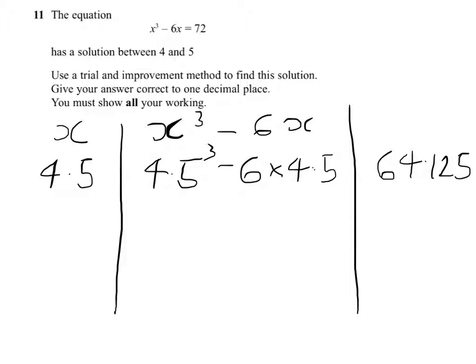So it's too small. That's quite a bit too small, so I'm going to jump up now and try 4.8. So I'm going to cube 4.8 and then take away 6 times 4.8, and we'll see what we'll get there. Well, that really was too much of a big step forward, so I should have gone to 4.6.